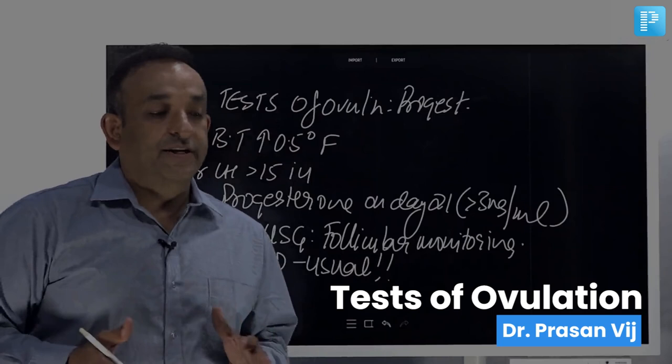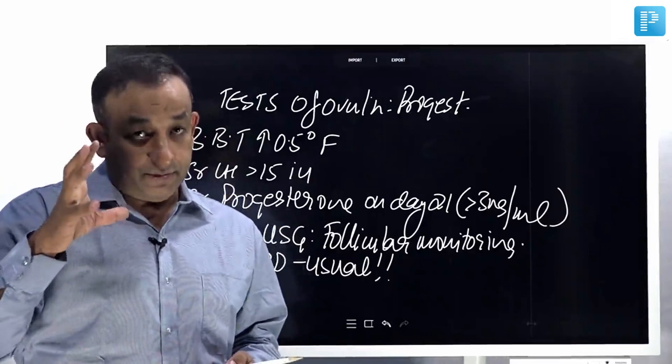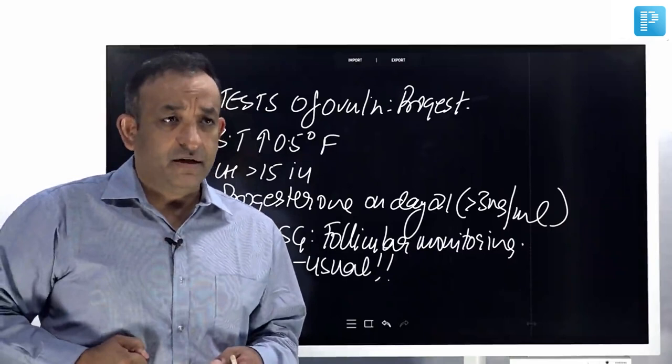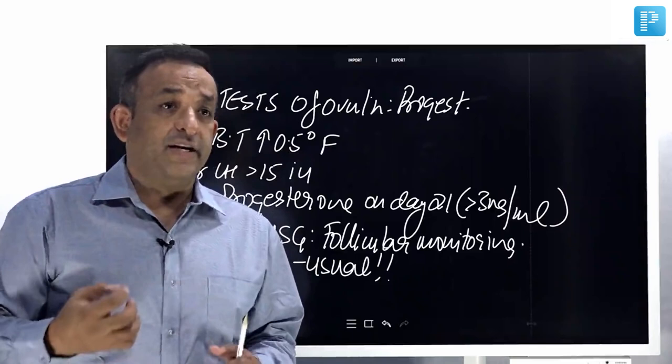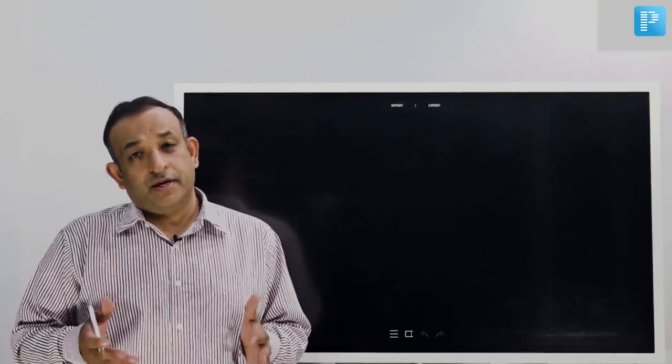The way I check ovulation in women who are having follicular monitoring is I start on day 9 of the menstrual cycle. Suppose she had her period on the 1st of August; on the 9th I'll do an ultrasound on the tummy and see if the follicle is growing. It would have reached dominance by day 9. Then I'll do it on day 11, day 12, day 13. I see on day 12-13 it's around 15-16 millimeters, on day 14 it is 18 millimeters, and on day 16 I see the follicle has shrunk. If the follicle has shrunk, it obviously means the patient has ovulated.